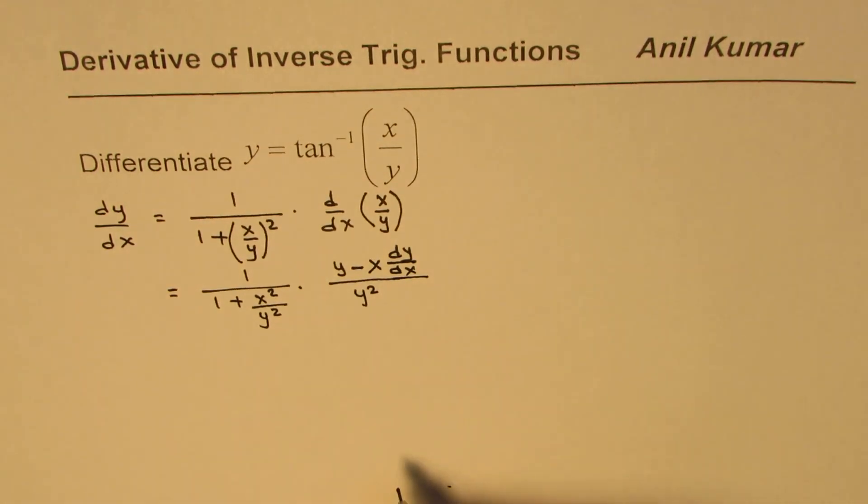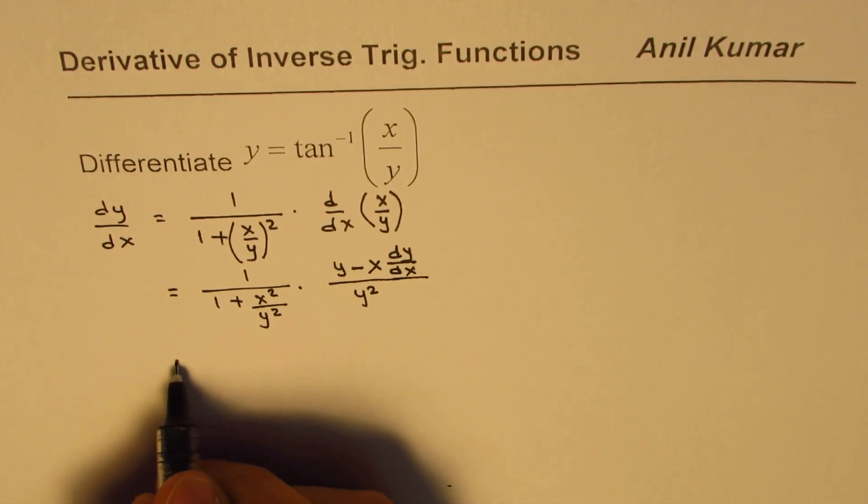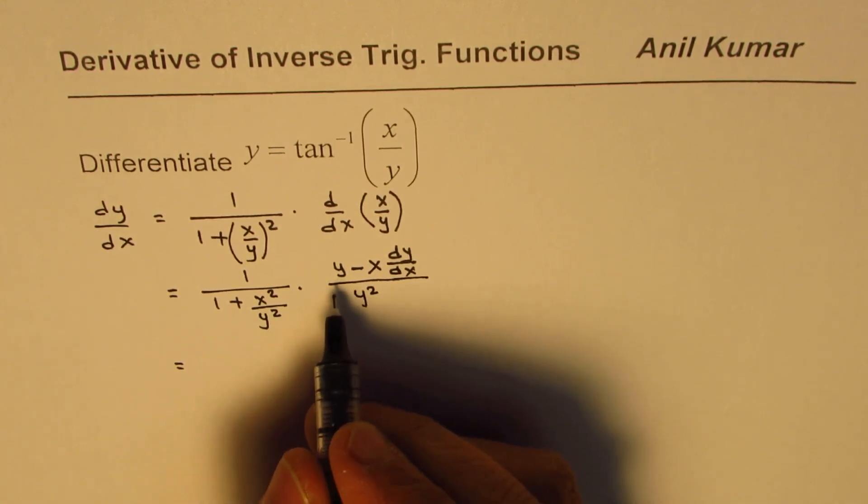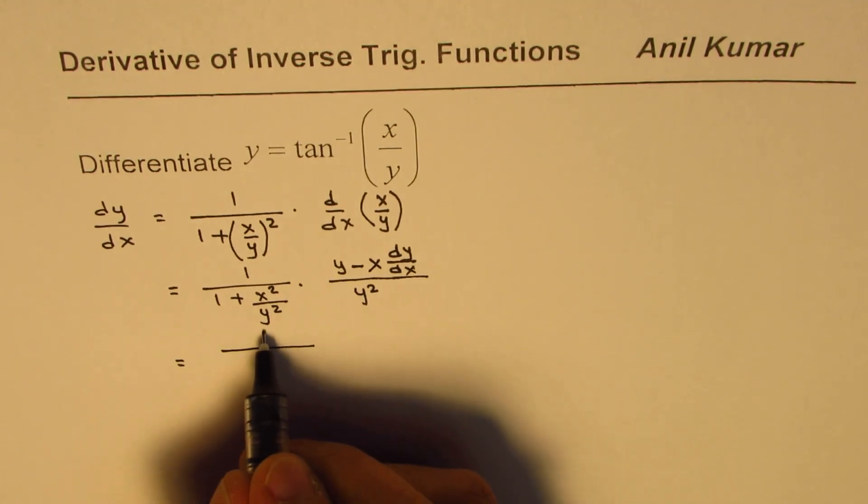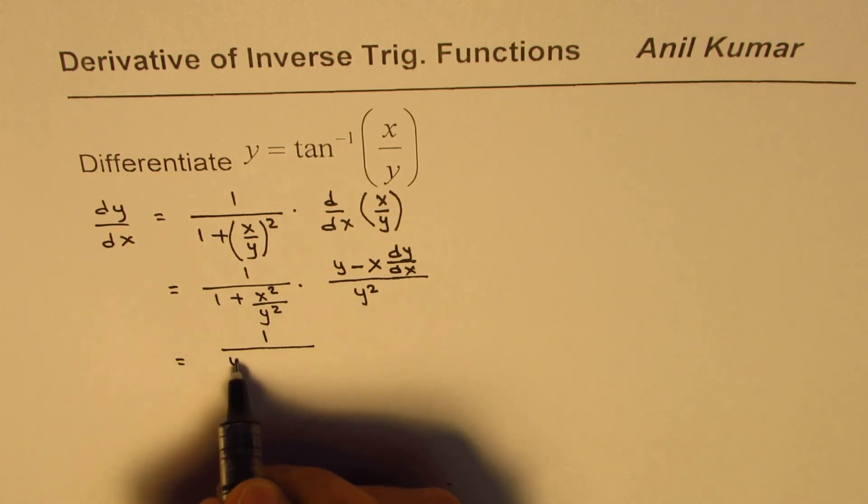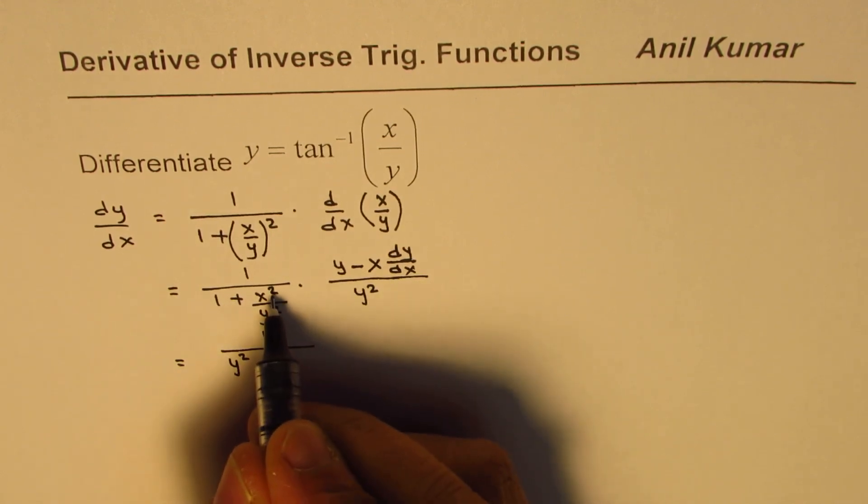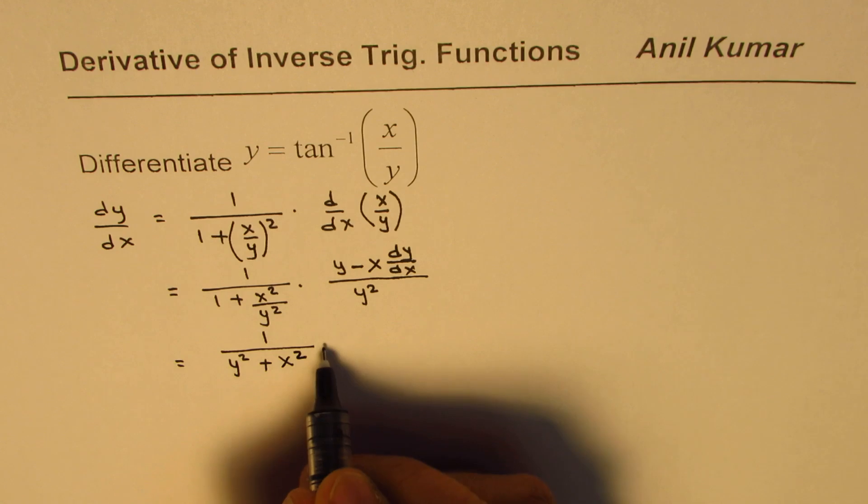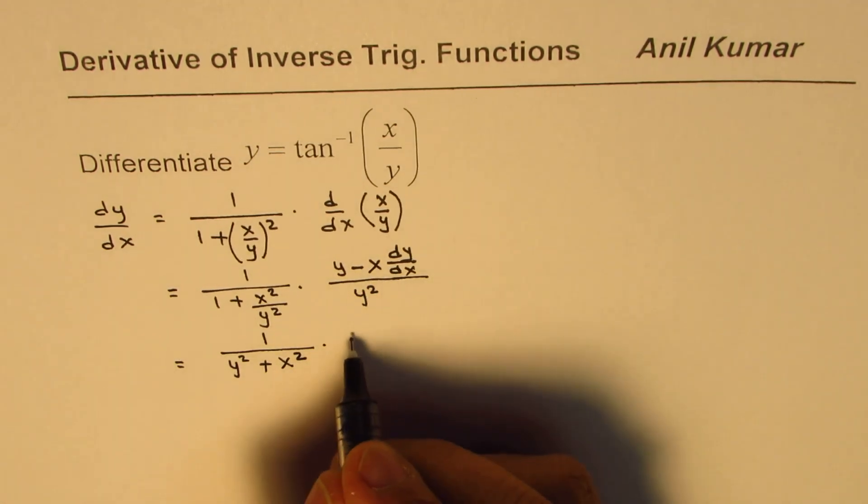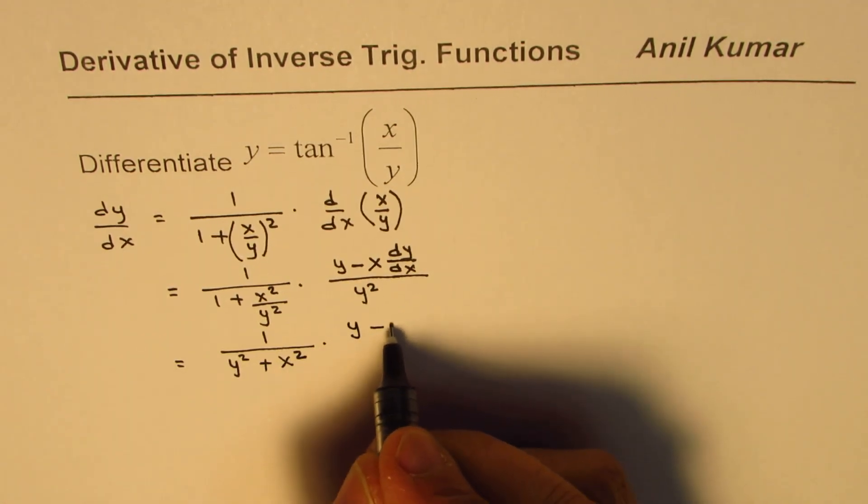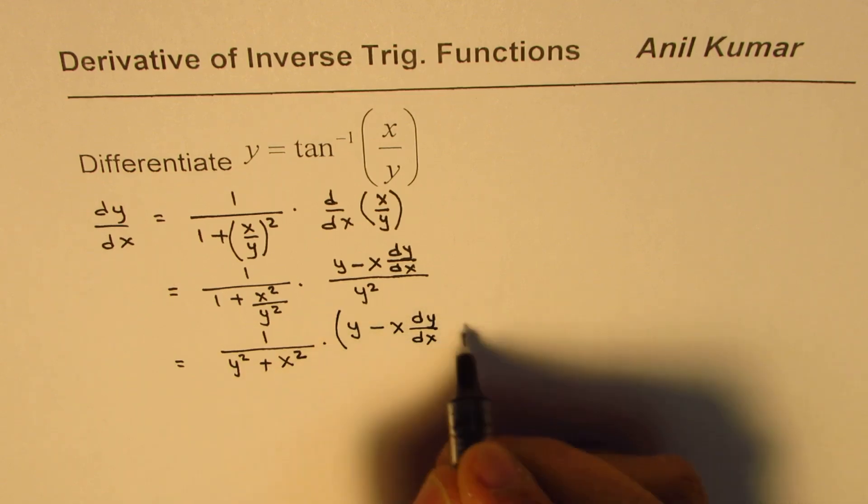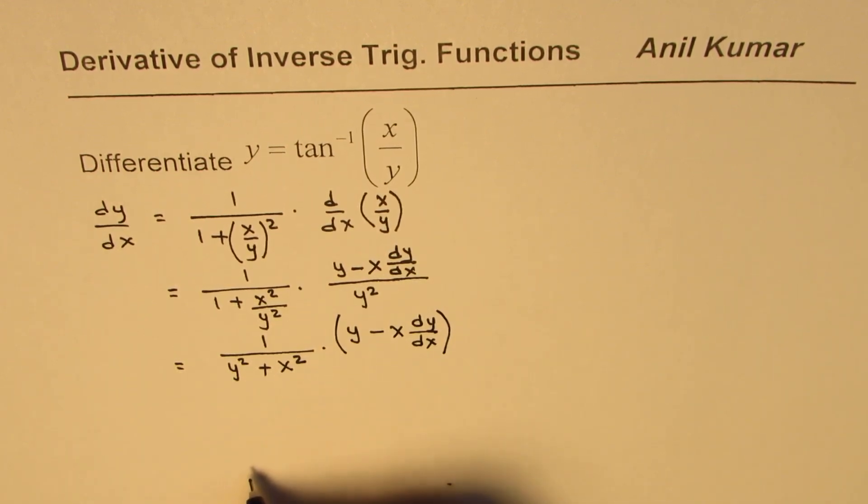So that's what you get. Now we can simplify a bit. We've got y squared here. When you multiply by y squared in this denominator, you get 1 over, when you multiply by 1 you get y squared plus x squared. Y squared cancels out, so you get y squared over x squared times y minus x dy/dx.